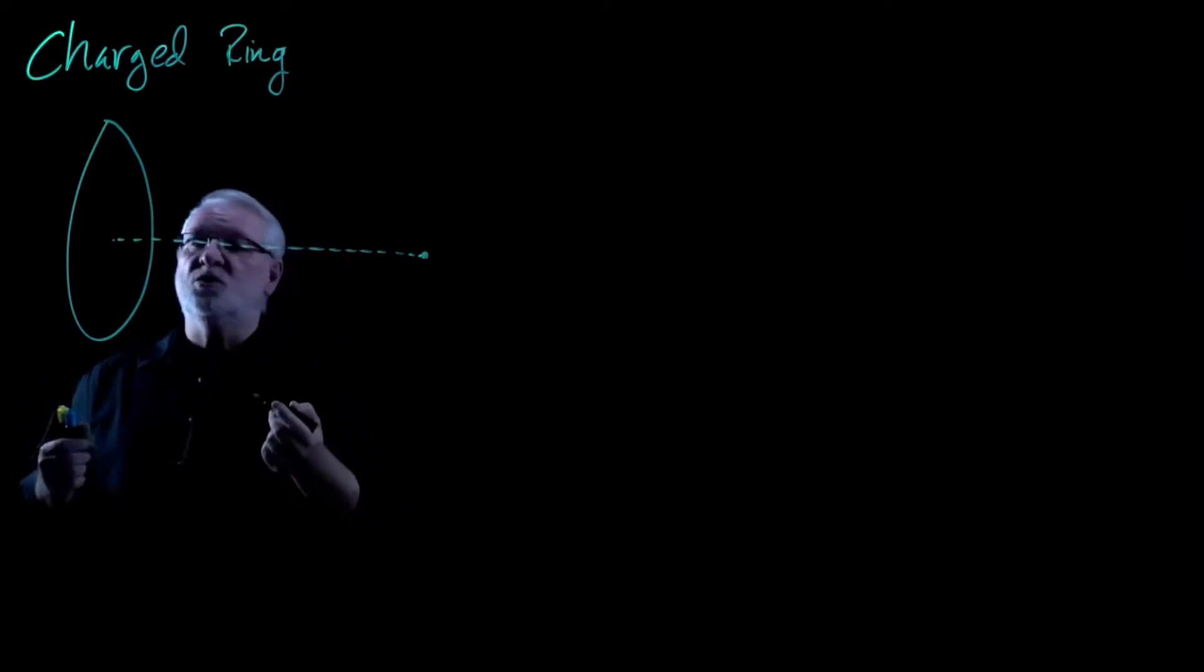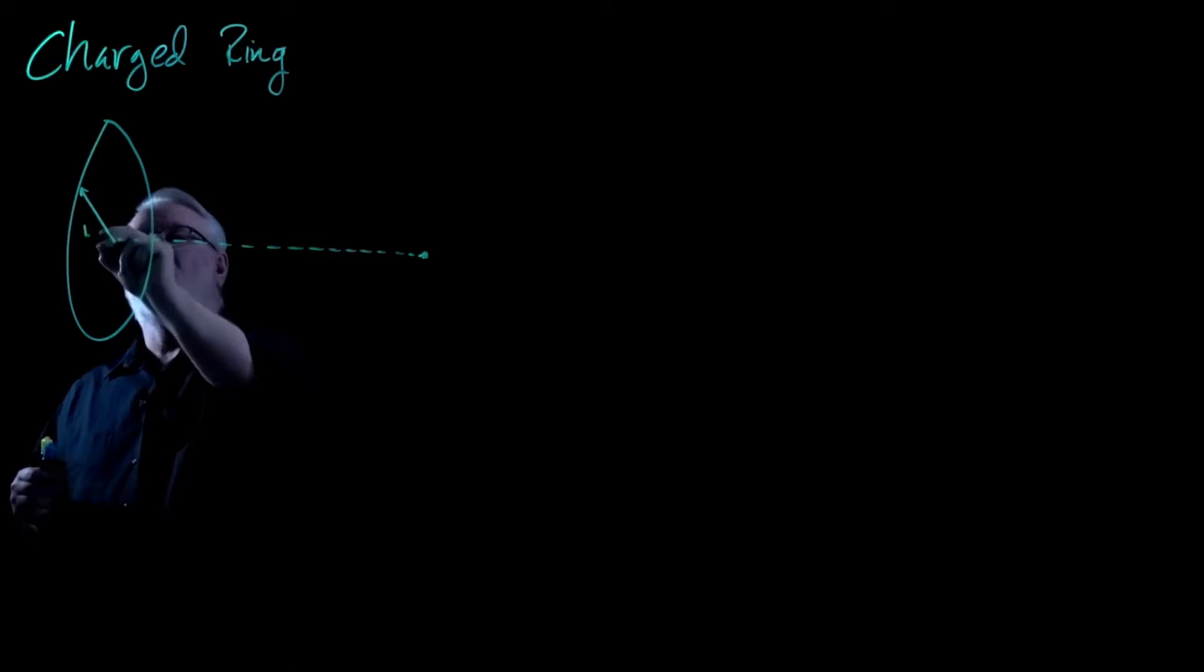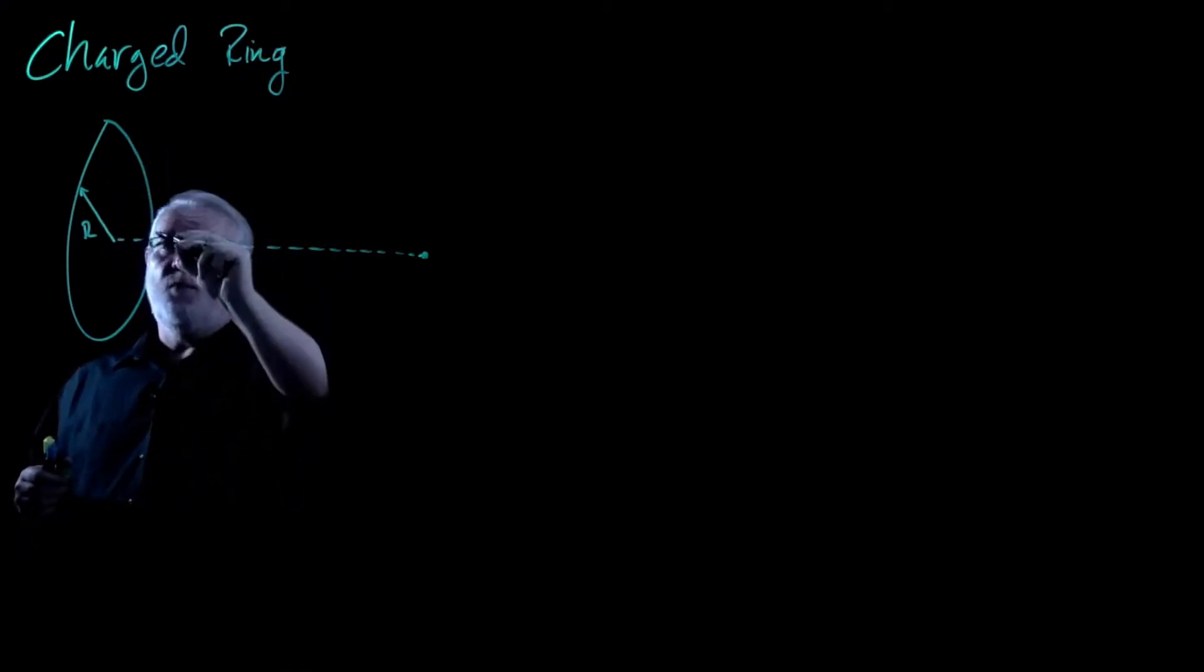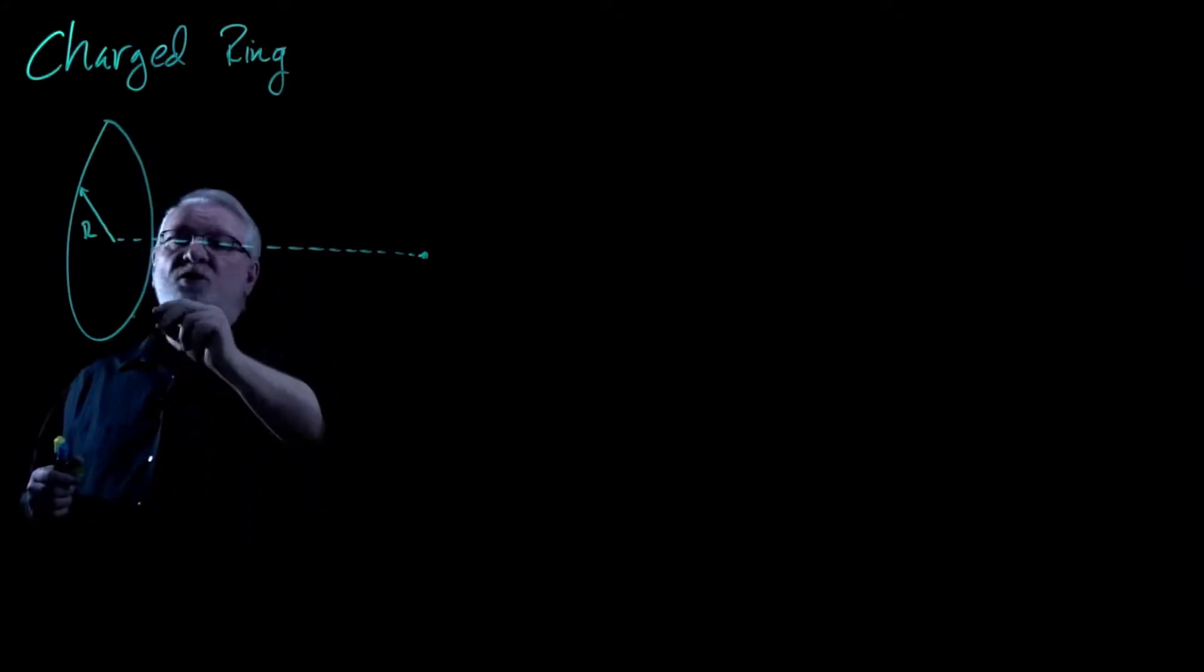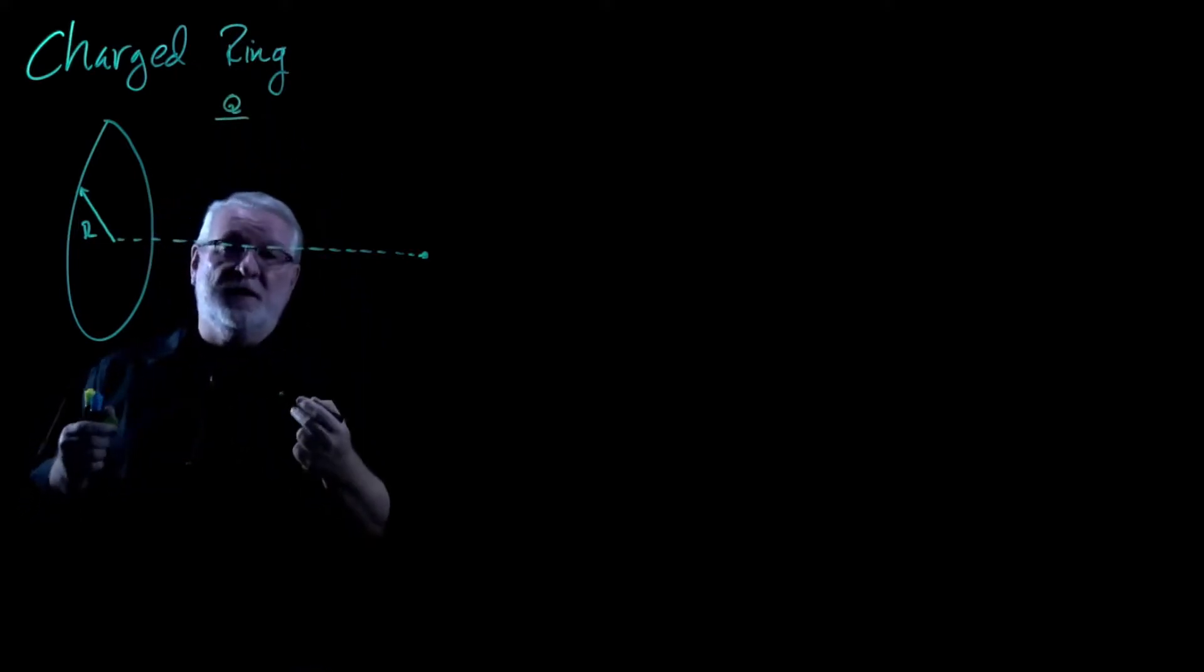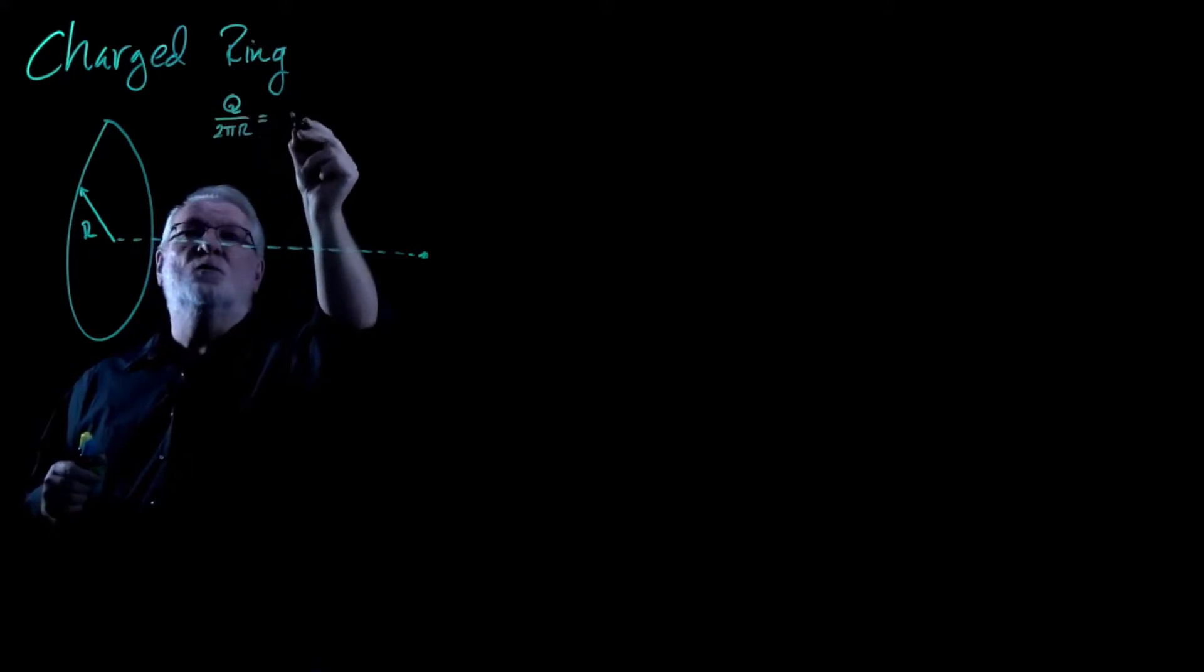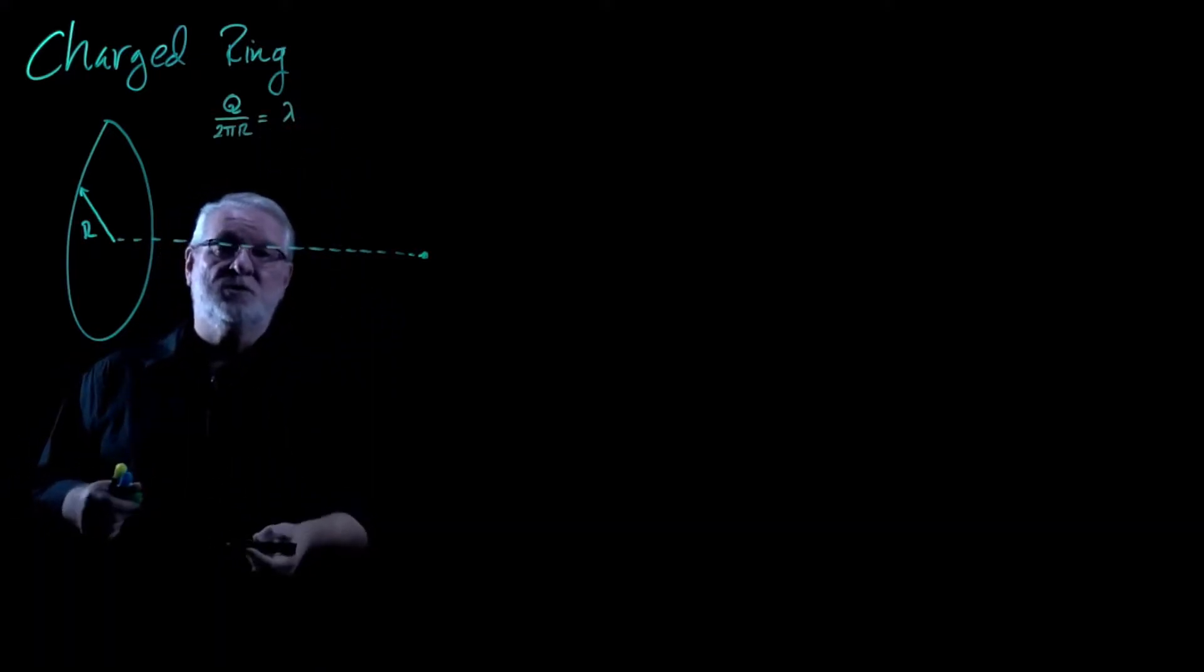Let's add some dimensions so that we can talk about this ring. So the ring will have a radius of R that runs from the center out to every point on the ring. The ring is going to have a linear charge distribution, very similar to all the other ones we've been doing. The total charge Q will be spread out over the entire circumference, which will be 2π times R. And that ratio will equal lambda, the linear charge distribution.